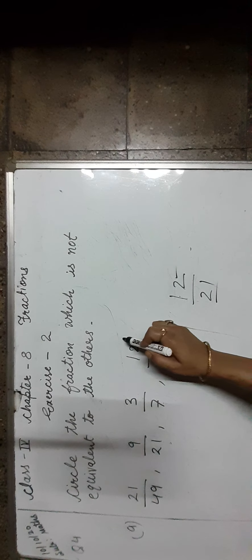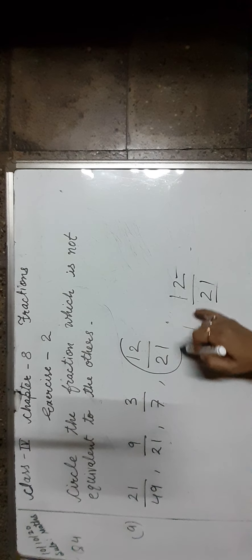Now let us check the last fraction, 12 upon 21. Check the divisibility — as you can see, 12 is an even number and 21 is an odd number, so it cannot be divided by the same number. Therefore, 12 upon 21 is not equivalent to the other fractions.